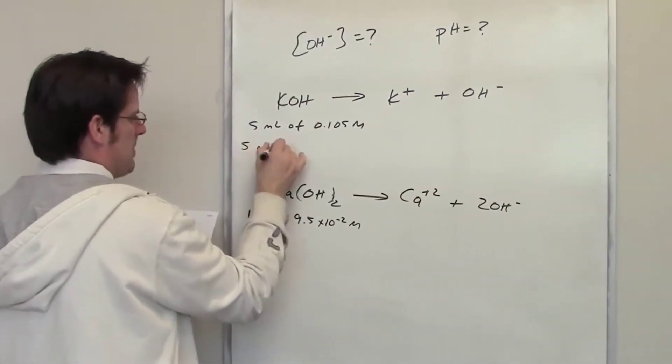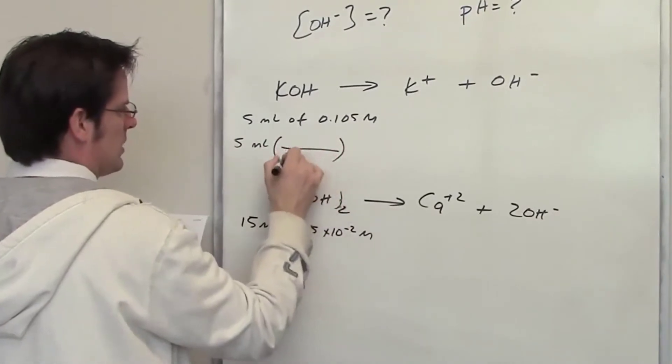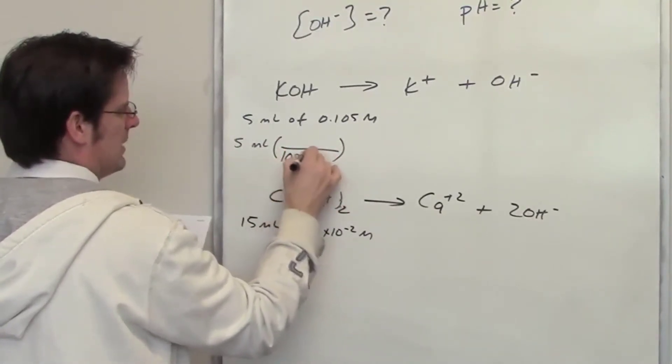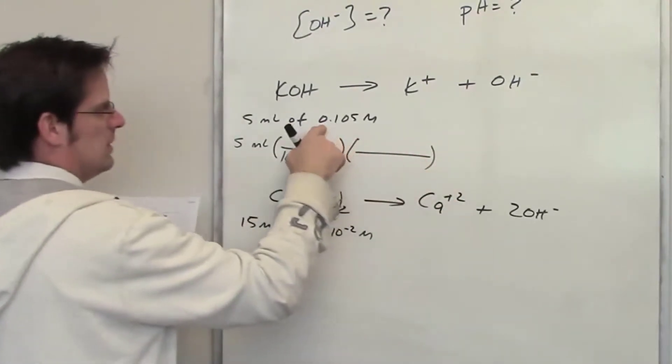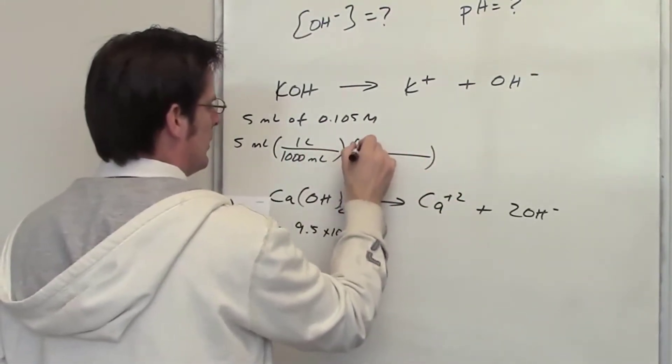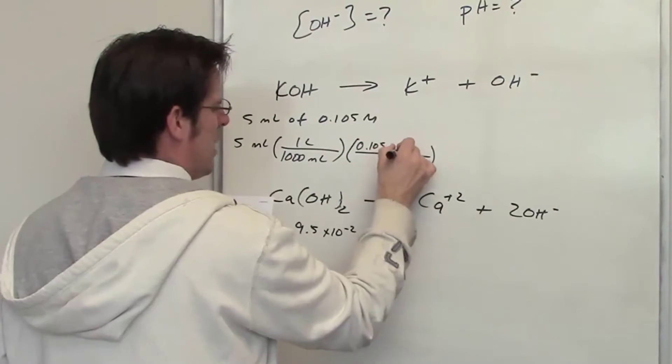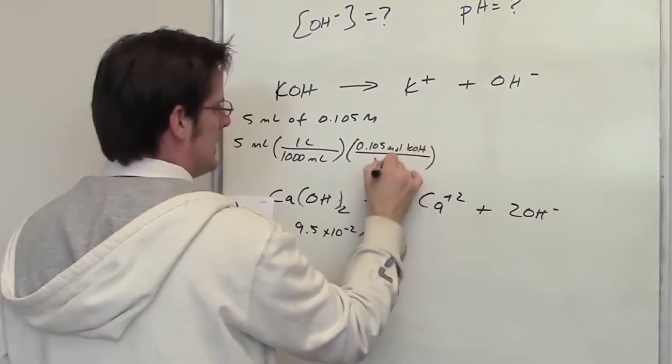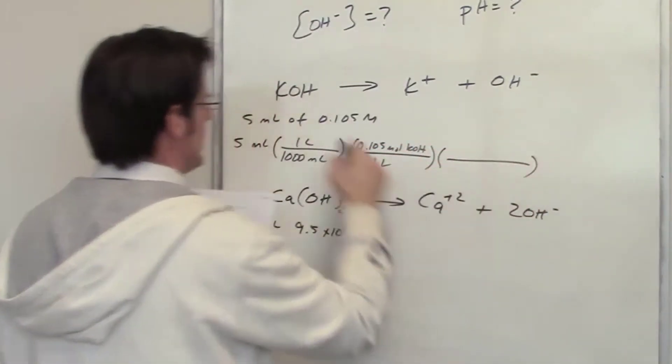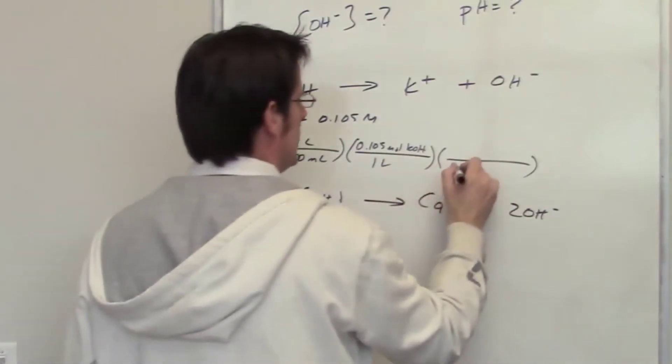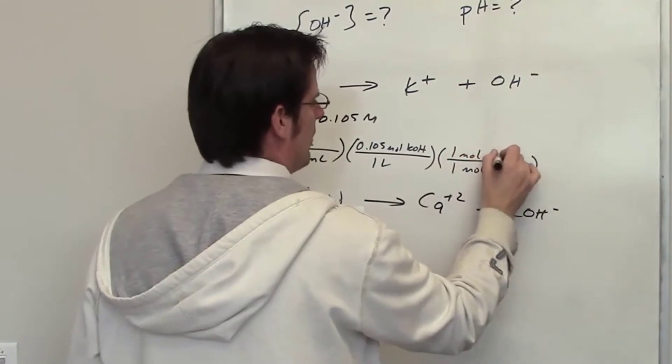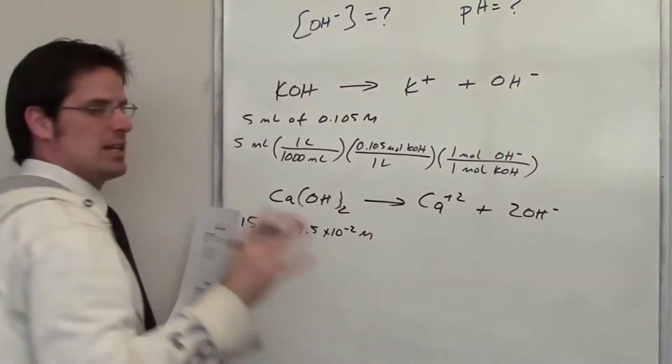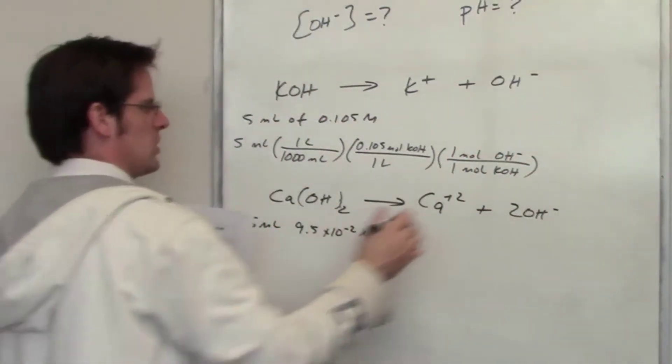5 mL, I need to convert that to liters. I know that 1,000 mL are present in one liter. I've got this solution, 0.105 moles of KOH in one liter. I also know from the stoichiometry in this equation that I have 1 mole of KOH for every 1 mole of hydroxide. I'll let you take a look at this for a moment. Now I'll start doing stuff.